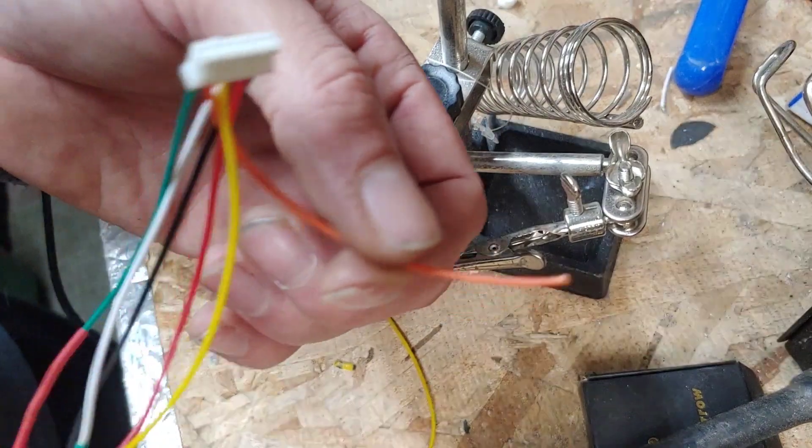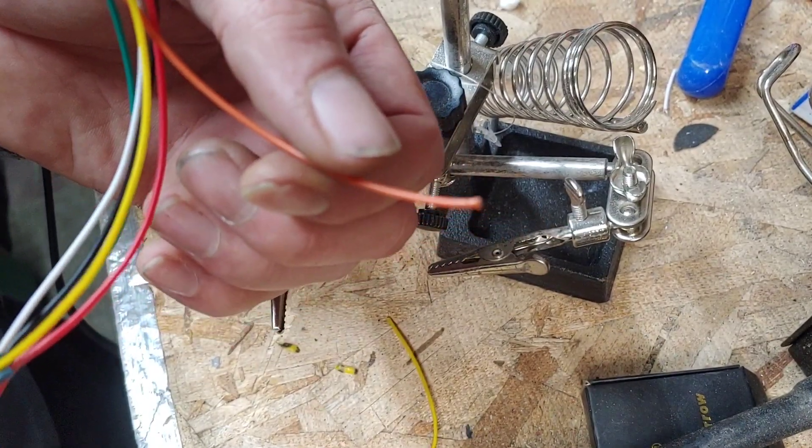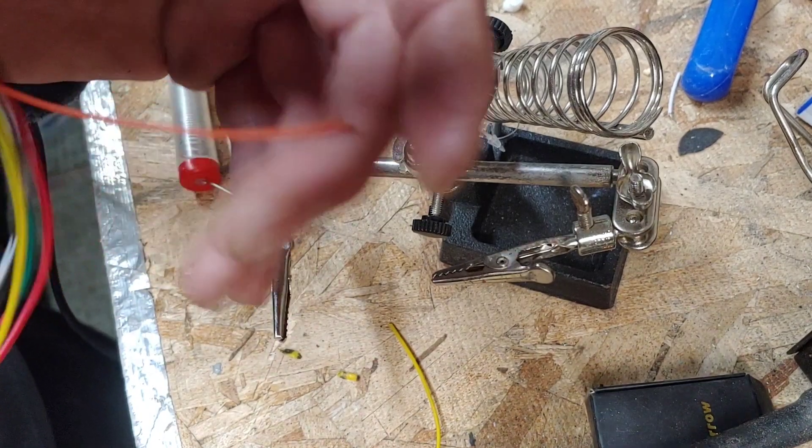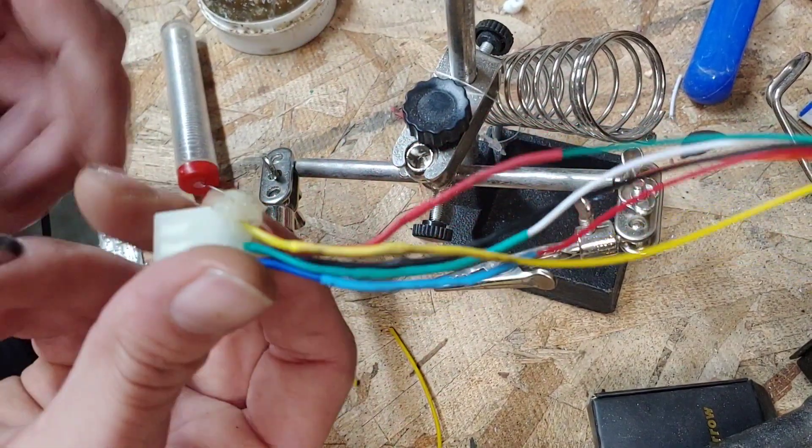And this is the temp sensor wire which the Trotter hub does not have a temperature sensor so I just shorten that and crimp the end so there's nothing exposed. So this piece is done.